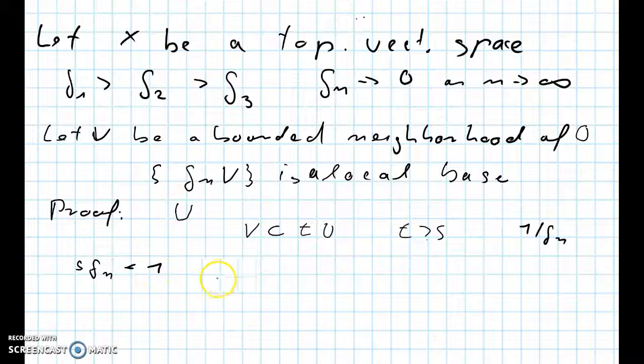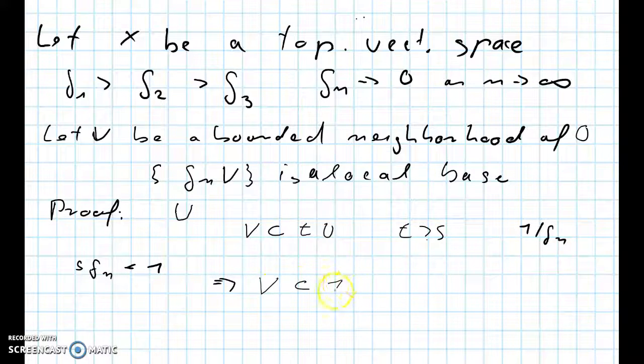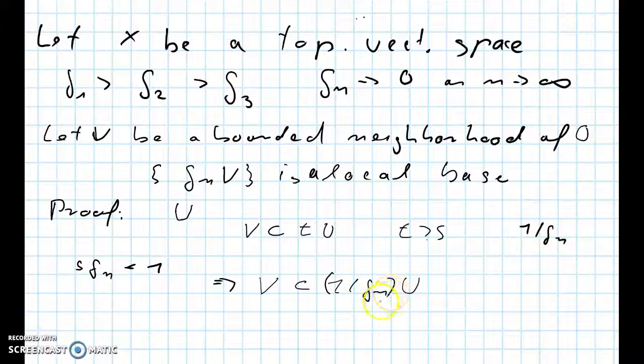And this means that V is inside one over sΔn times U, because one over Δn is bigger than s if you pick Δn small enough.